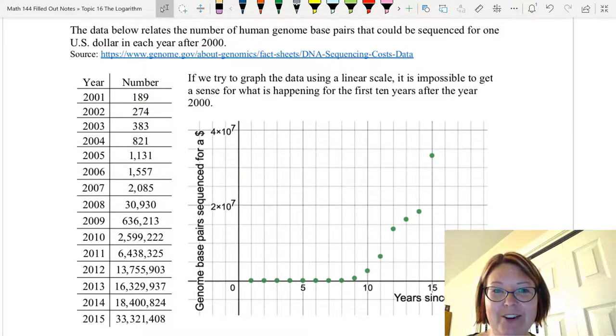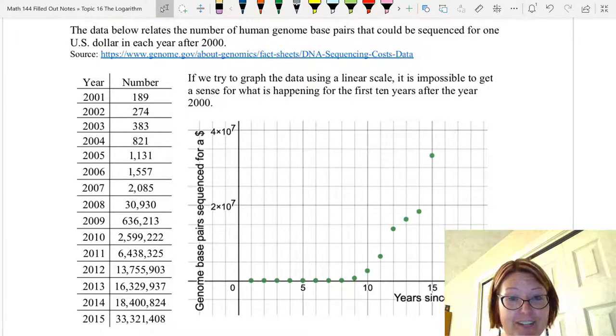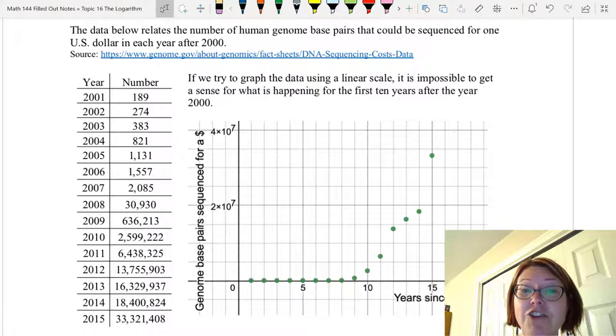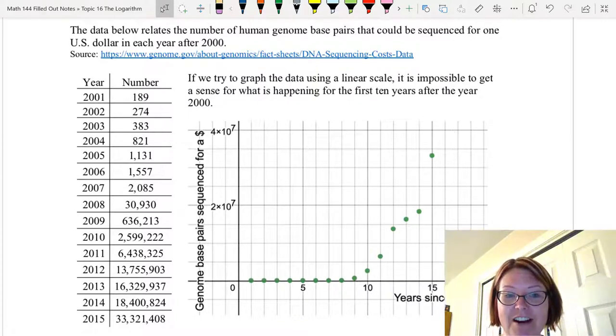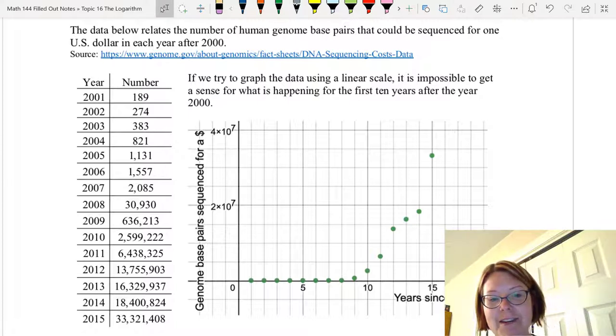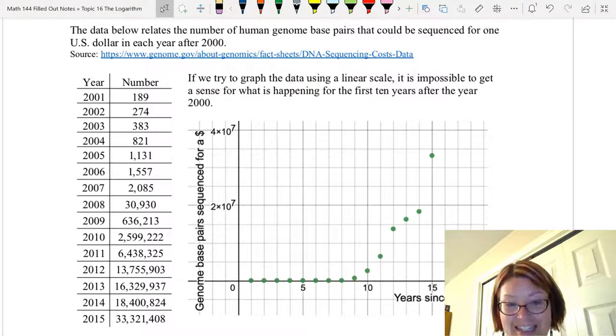Now I've got one for you to try. The data we've got here relates the number of human genome base pairs that could be sequenced for one US dollar in every year. So every year the one dollar you spend goes farther to sequencing human genome base pairs. This starts with 189 base pairs sequenced in the year 2001, then 274 in the year 2002. We're going to count by one year each time. So 383 base pairs in 2003, then 821, then 1131, then 1557, 2085, 30,930 - that's a big jump there. Then 636,213, another big jump. Then 2,599,222, then 6,438,325, 13,755,903, 16,329,937, 18,400,824, and 33,321,408.